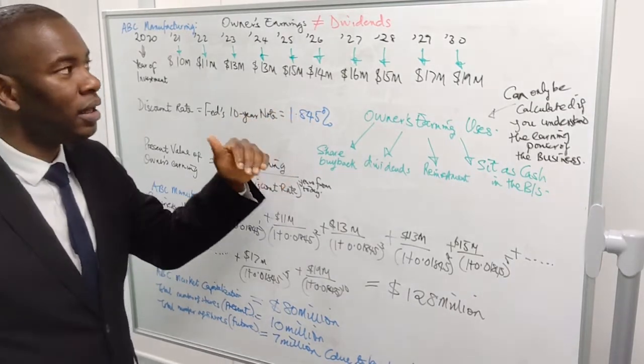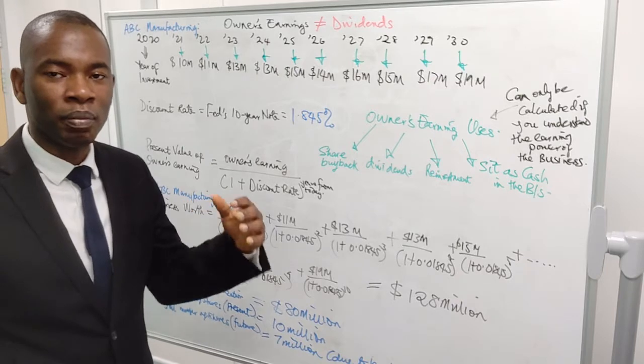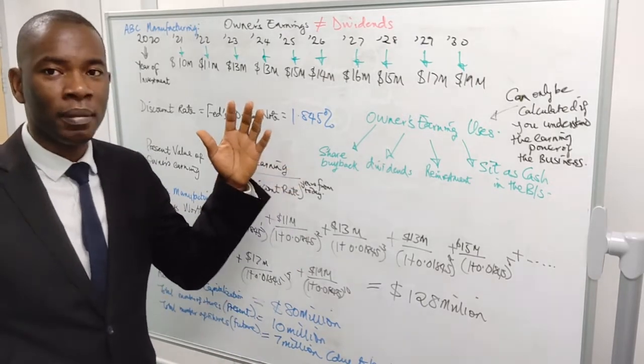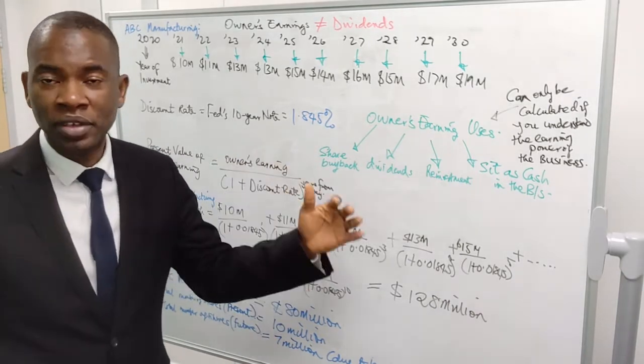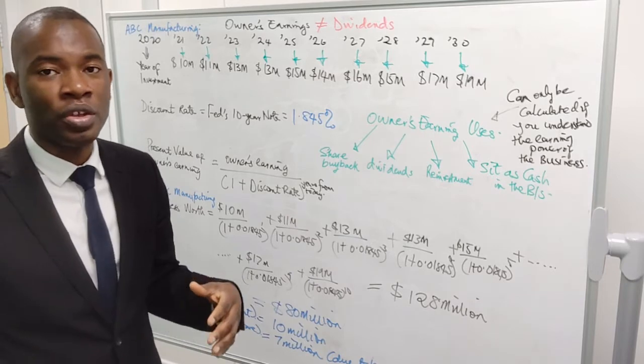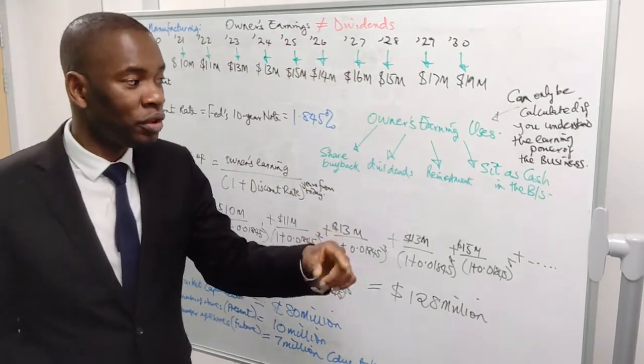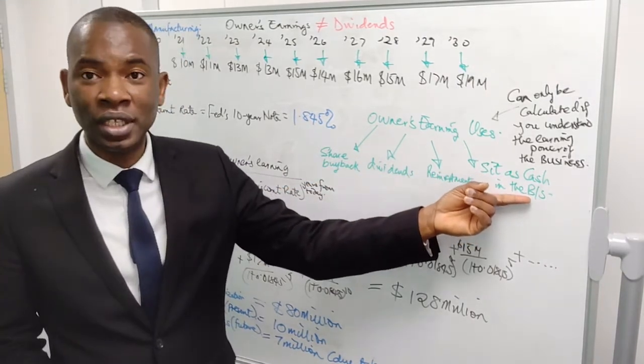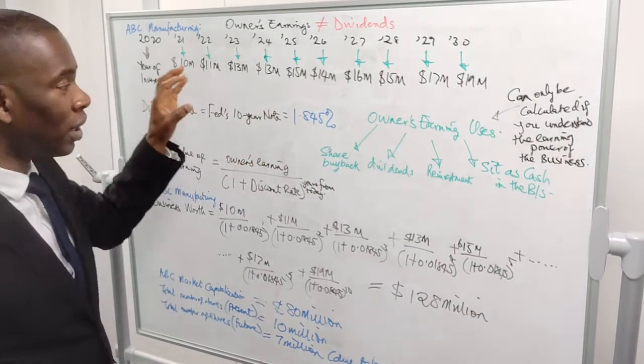This is our owner's earning. Remember, owner's earning is not dividends. Owner's earning is what is left after the owner has paid the suppliers, has paid his creditors, has paid his taxes, every other thing that is left. After he has actually also deducted the cost of issuing free shares to members of staff and everything. This, what is left, is what you call owner's earning. This one, you also add back depreciation. That is not equal to dividend. From owner's earnings, you get money for dividends. You get money for reinvestment beyond what we have depreciated. It can sit in the balance sheet as cash. It can also be used for share buyback. These are ways you use owner's earnings. That is what you are going to discount.